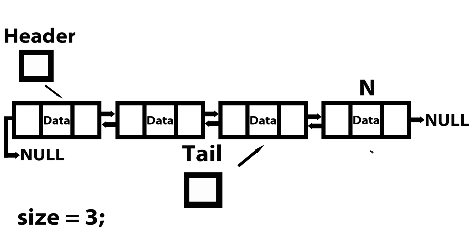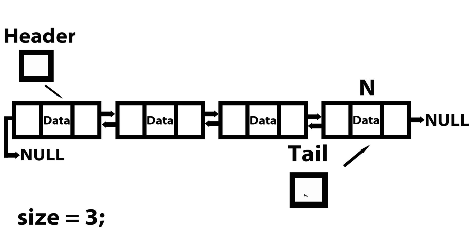So now that completes the link: tail arrow next is pointing to n, and n arrow prev is pointing to tail. Now we need to update what tail is pointing to, because n is the current last node. So we just set tail to point to n. And the last step, since we successfully inserted a new node, is to increment the size.